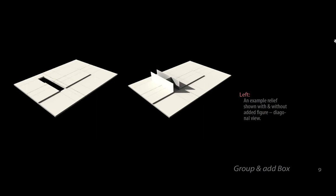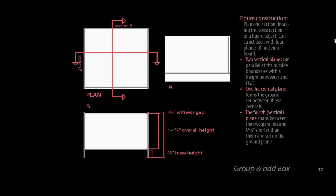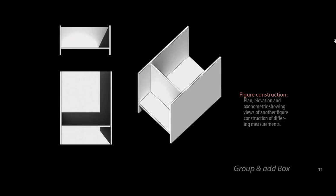Some of your cards are going to have multiple figures built on them. This example only shows one figure, but some of your cards will have up to three. The built-up figures are composed of three vertical walls — two that are dominant — and then a horizontal base. It is up to you where you situate this inside the base; the horizontal plane may be underneath, even with, or slightly higher than the base.